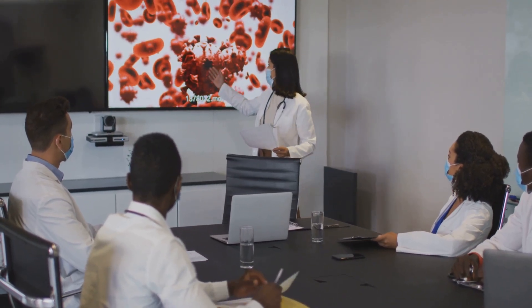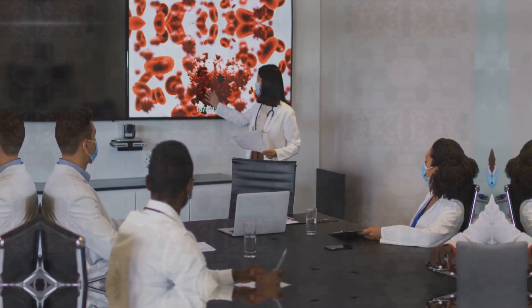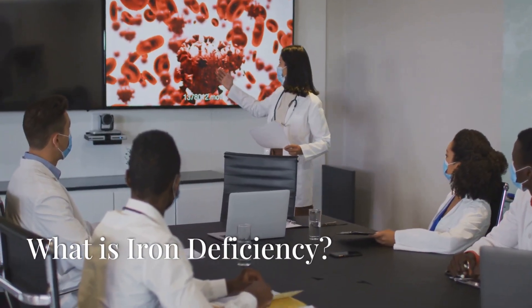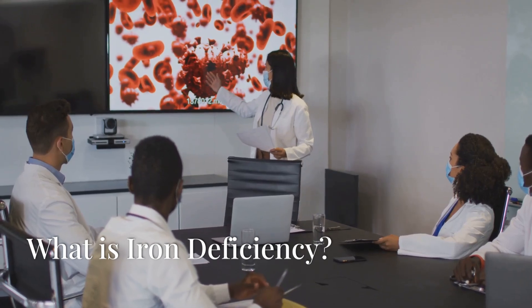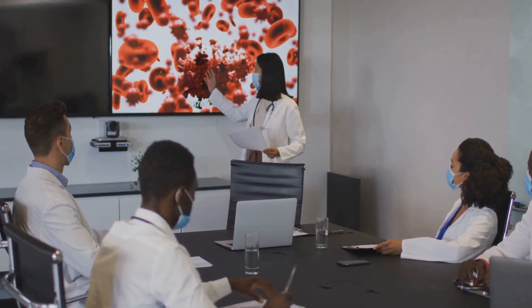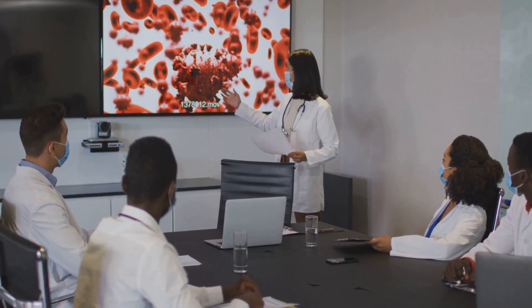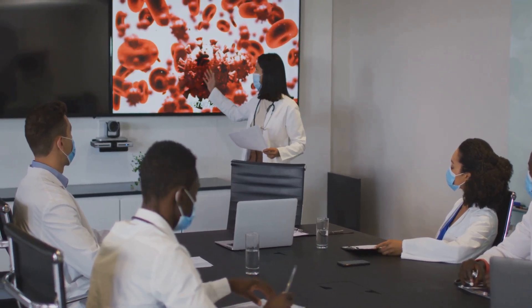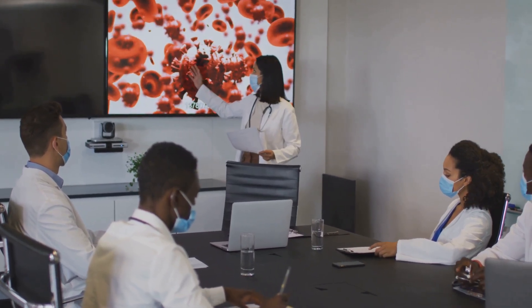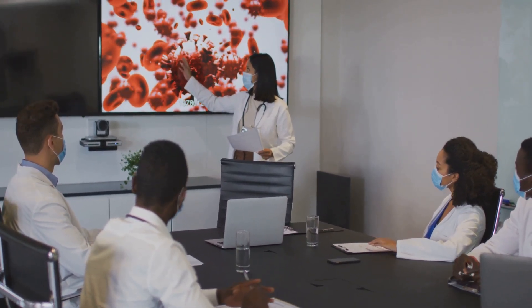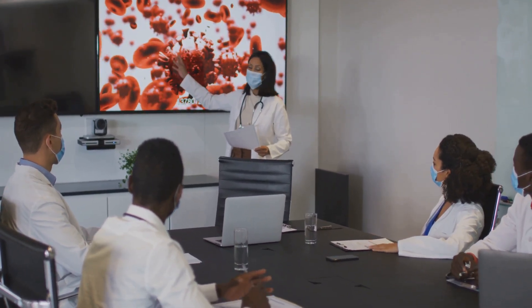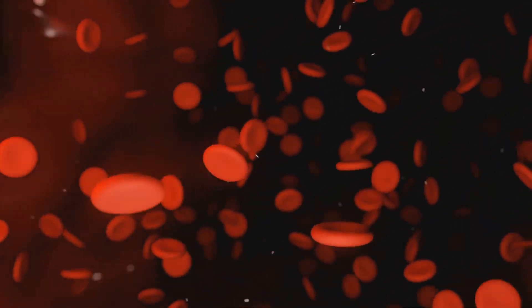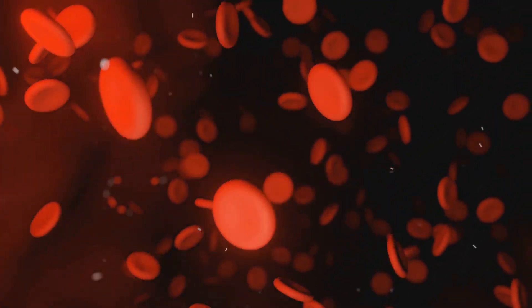What is iron deficiency? Iron deficiency occurs when your body lacks enough iron to produce sufficient hemoglobin — a protein in red blood cells responsible for carrying oxygen throughout your body. This can lead to iron deficiency anemia, a condition where your body doesn't have enough red blood cells to carry oxygen efficiently.